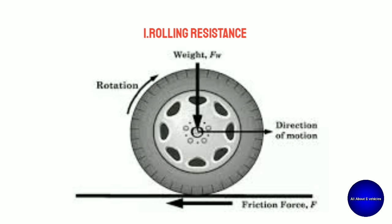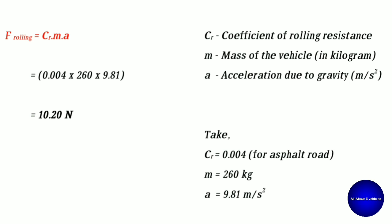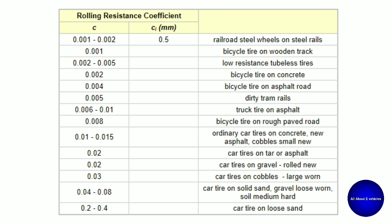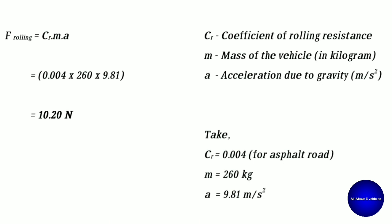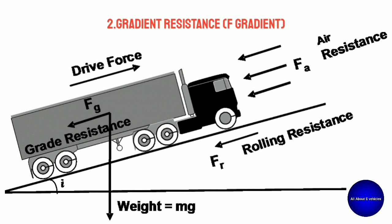First: rolling resistance. Rolling resistance is the friction between the road wheels and the road surface. The formula is F_rolling = Cr × m × g, where Cr is the coefficient of rolling resistance, m is the mass of the vehicle in kg, and g is acceleration due to gravity in m/s². Taking Cr = 0.004 (bicycle tire on asphalt road), mass = 260 kg, and g = 9.81 m/s², the rolling resistance force is 10.20 Newton.